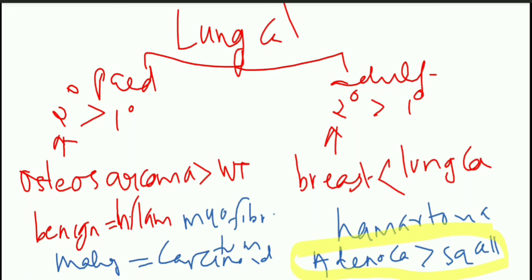This is actually the criteria when we are speaking with respect to the world. In India, the most common is squamous cell carcinoma. So you should know each and every point: overall the most common tumour in the lung is by metastasis — secondary tumours — and you should know the origin of these secondary tumours, as well as the most common benign and malignant primary tumours. Thank you.